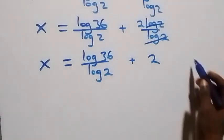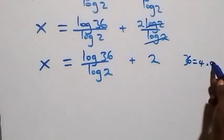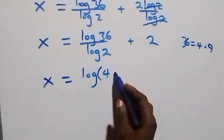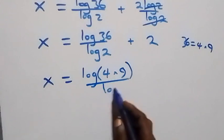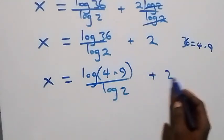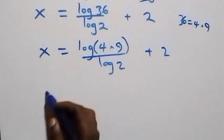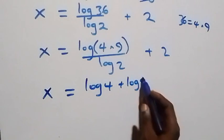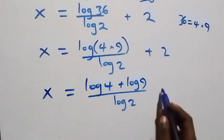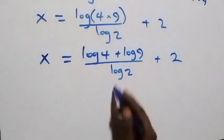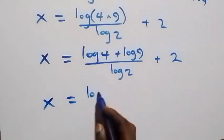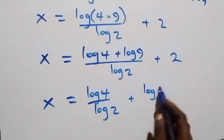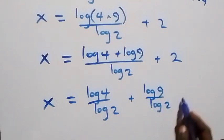We can express 36 as 4 times 9, so x equals log 4 times 9 over log 2 plus 2. Applying the log product law, this becomes x equals log 4 plus log 9, all over log 2, plus 2. Separating into two fractions: x equals log 4 over log 2 plus log 9 over log 2 plus 2.